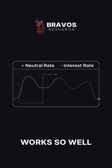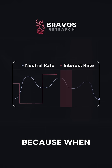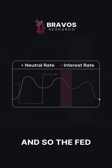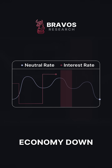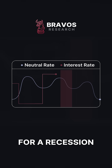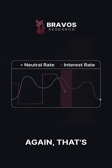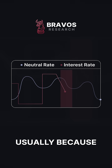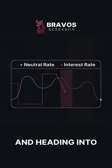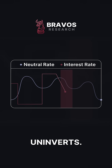This is why the yield curve works so well as a recession indicator. When the Fed tightens above the neutral rate, the yield curve inverts and the Fed is essentially sowing the seeds for a recession. When they begin to lower interest rates again — usually because the economy is slowing down significantly and heading into a recession — that is when the yield curve un-inverts.